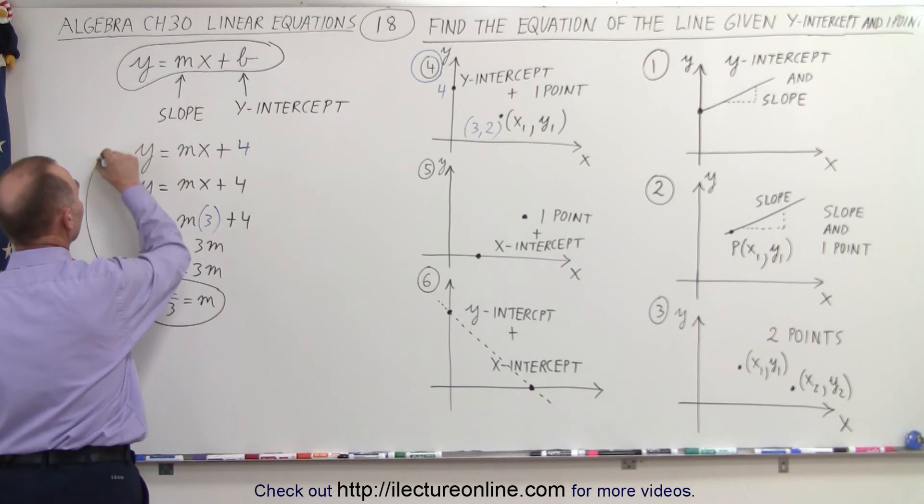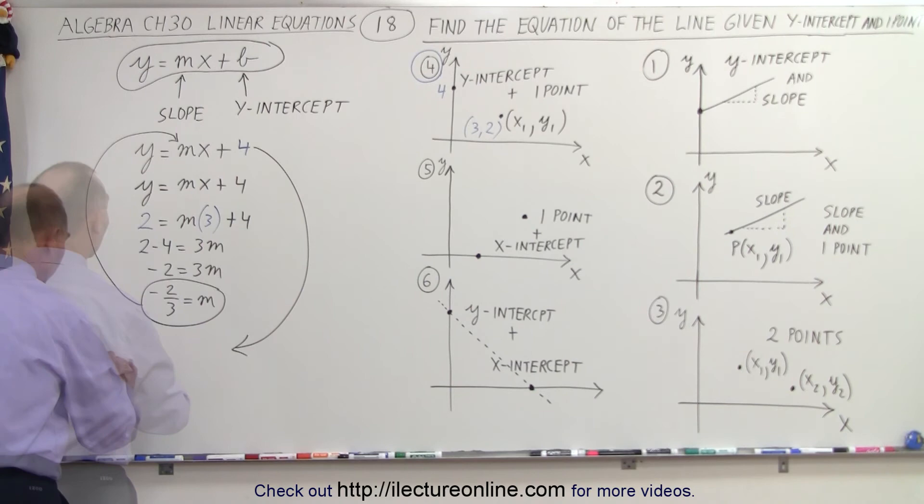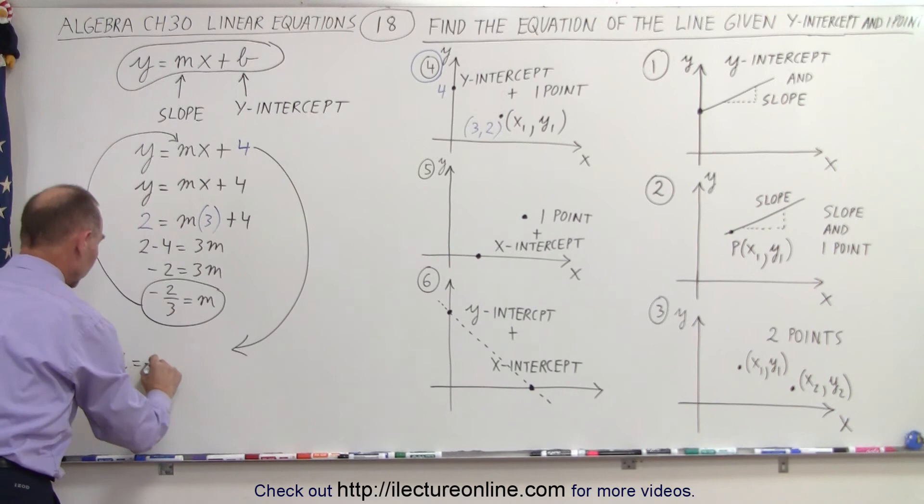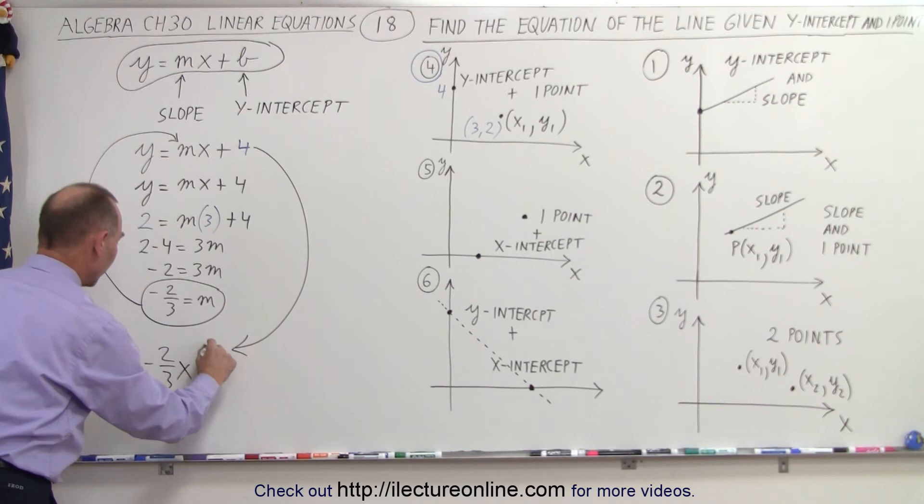So now we have found the slope of the line as well, which we can plug back into the equation right there. And when we do, we can rewrite the equation. y is equal to, and instead of m, we're going to write minus 2 thirds x, and then we have plus 4 for the intercept.